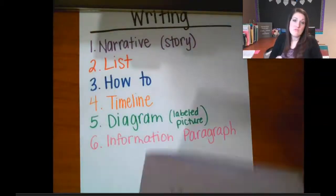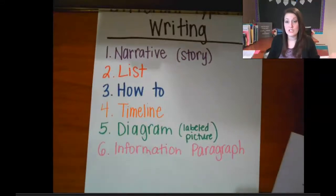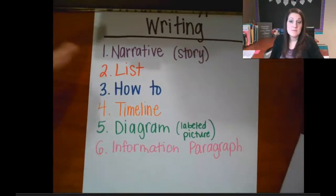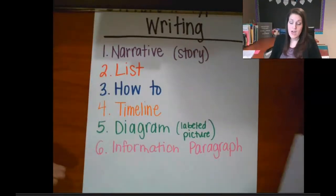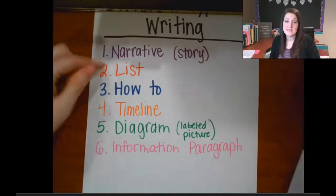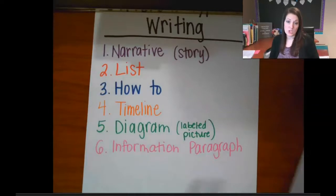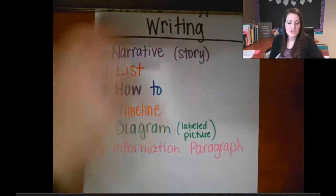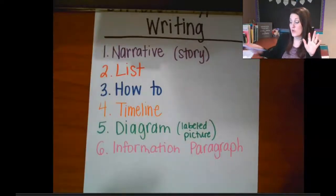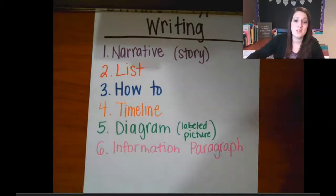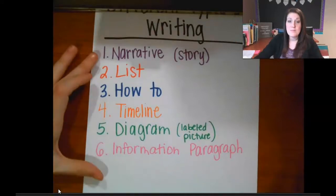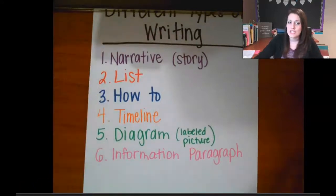Those are all the different types of writing you could include in your all about book. Today was just a learning, think-about-it day. You will be picking more than one of these, because if every chapter was just a list or five how-tos, it'd be boring. Having a good mixture of these different types of writing will make your all about book much more interesting. Next time we write, we'll pick our topic and what type of writing to do for each chapter.